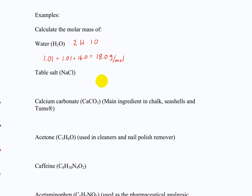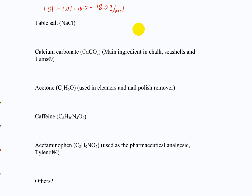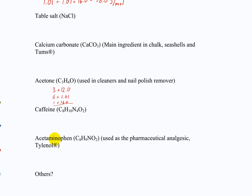Why don't you try that with these other ones? When they get big, it's usually helpful to set up a multiplication and addition problem. For acetone, I've got 3 carbons — that's 3 times 12.0; 6 hydrogens — that's 6 times 1.01; and 1 oxygen — that's 1 times 16.0. Add all those up and see what you get. What did you get for NaCl? About 58 or 59. What about calcium carbonate? About 100. Caffeine came out to 194. Acetaminophen — 151.